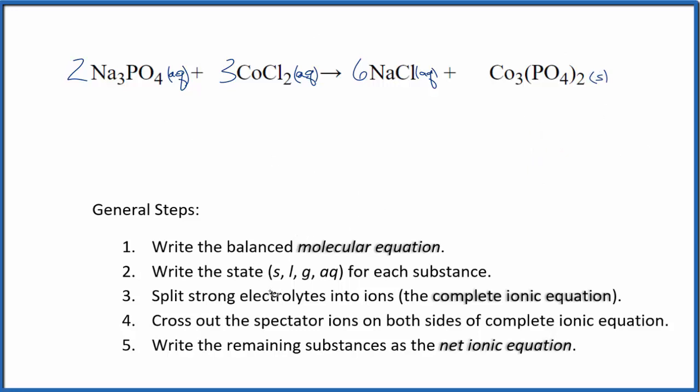So now that we have the states, we can split the strong electrolytes into their ions, and that's going to give us the complete ionic equation. Sodium is in group one, that'll be one plus. The whole phosphate here is three minus, good one to remember. Two times three, that gives me six of these sodium ions, and a plus.